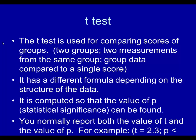You normally report both the value of t and the value of p. For example, t equals 2.3; p less than 0.05 is what you should be seeing there on the screen.